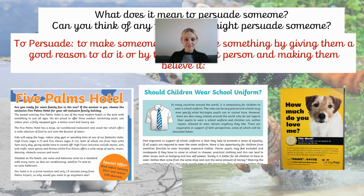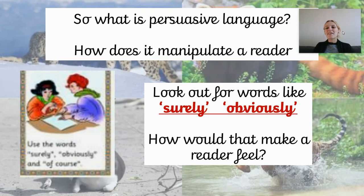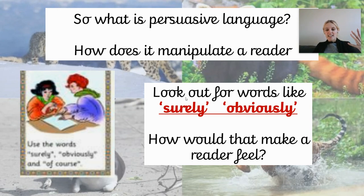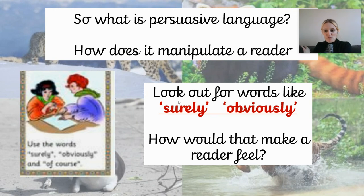Now, what does persuasive language mean and how does it manipulate the reader? Can you believe that by using different language you can change the way a reader feels? So these are things you've got to look out for today. Words like 'surely' and 'obviously' - think about how that makes a reader feel. If you saw something like 'Obviously this is a no-brainer, you must accept this decision right now' - by using the word 'obviously' it makes the reader think, 'Oh, maybe it is obvious.'